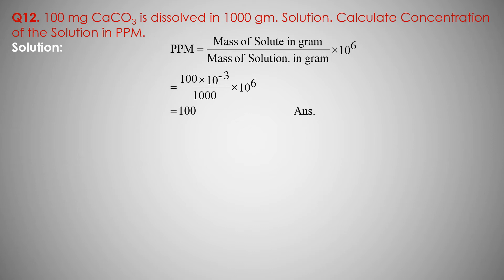PPM concentration means number of parts by mass of solute per million parts by mass of solution. PPM concentration: mass of solute is 100 mg, convert to grams — that is 10 to the power minus 3 grams — upon mass of solution 1000, into 10 to the power 6. Our answer is 100 ppm.